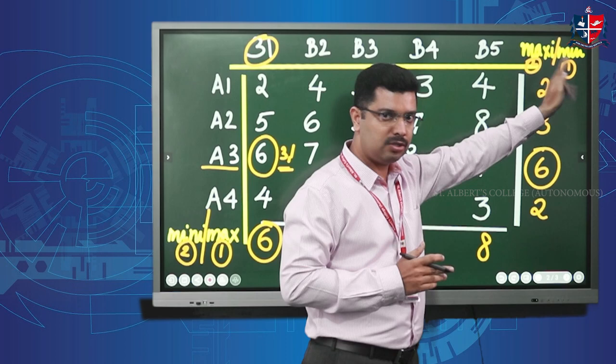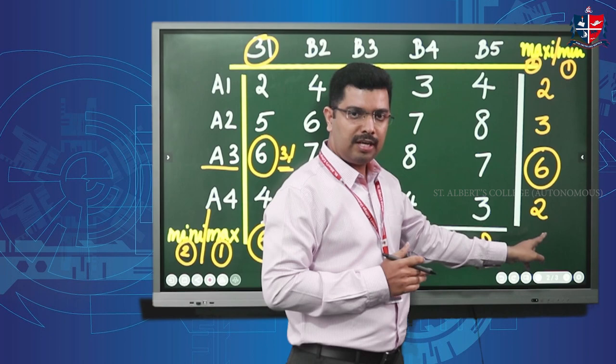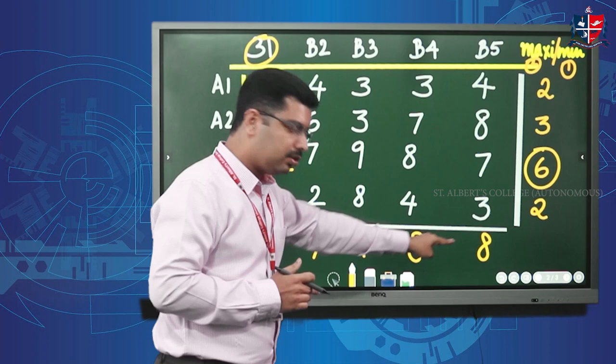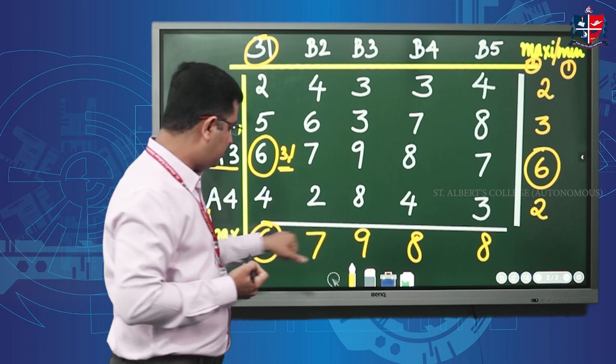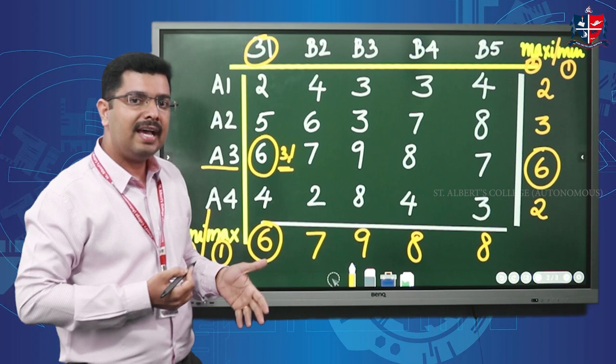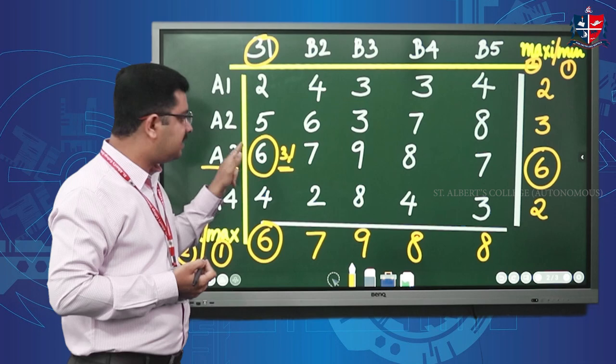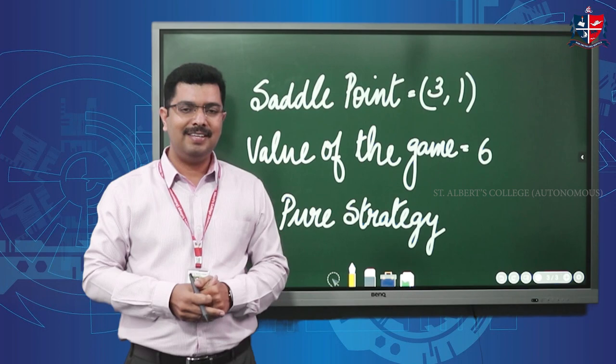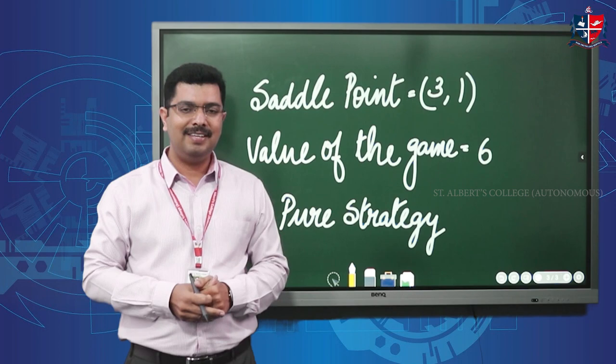In row operations, take the minimum value of each row, then select the maximum among those minimums. For column operations, take the maximum value of each column, then find the minimum among those maximums. If both results are equal, that common value is the value of the game, and the corresponding cell reference is the saddle point. Keep practicing — I'm putting one question for you to practice. Thank you so much!